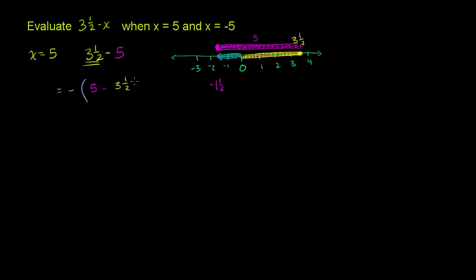And there's multiple ways you can do this. You could probably do this in your head. If it was 5 minus 3, you would get 2. But you have to subtract 3, and then you have to subtract another half. So you would get to 2 and then subtract another half, you would get to 1½. So 5 minus 3½ is 1½. Stick the negative out front. Negative 1½.